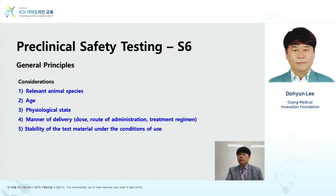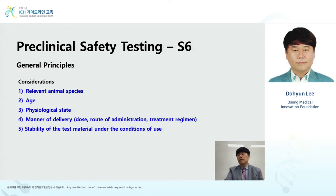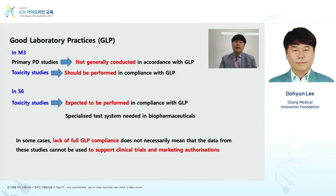General principles of preclinical safety testing: first, relevant animal species — I'll come back to this point later, as it is the simplest and the most difficult challenge. Age and physiological state of animals, manner of delivery, dose, and stability of the test material must also be considered.